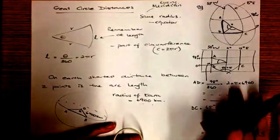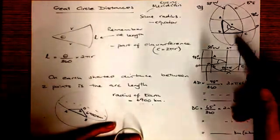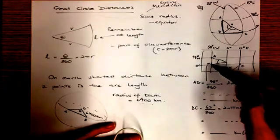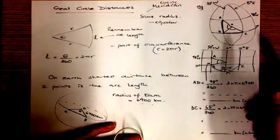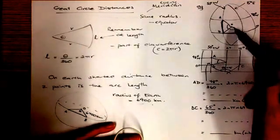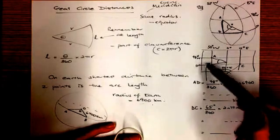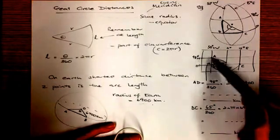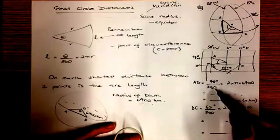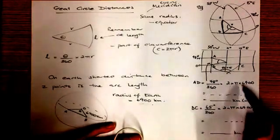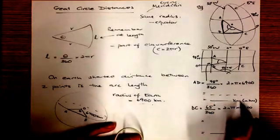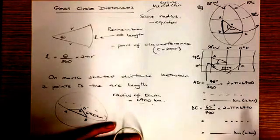Looking at A and D first - they lie on the meridian 50° west, so I can use arc length to find the distance between them. The angular distance between A and D: one's on the equator, one's on 48° north, so there's a 48° difference. So 48/360 × 2π × 6,400 gives us an answer, which I've rounded to the nearest kilometre.